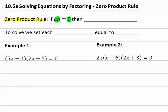Then we know something about one of those two things. Either the first factor is equal to zero or b, the second factor, is equal to zero. So in order to solve something that's factored and equal to zero, we can set each factor itself equal to zero.